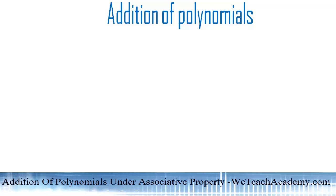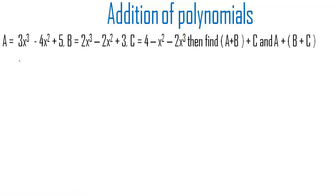Welcome to vtchecademy.com. In this presentation we are going to solve an example on addition of polynomials. We have expression A as 3x³ - 4x² + 5, expression B as 2x³ - 2x² + 3, and expression C as 4 - x² - 2x³. We have to find (A+B)+C and A+(B+C).